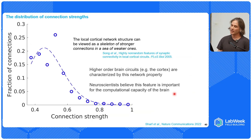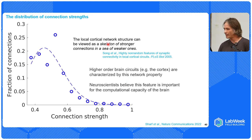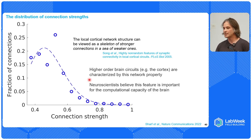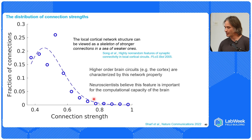Looking at the probability distribution of all these connections, we see that this network can be viewed as a skeleton of strong connections within a weaker background sea of weak ones. If you painstakingly look at patch clamp data in the cortex, you'll see that functional connections also follow this similar scaling rule. Higher order brain circuits such as the cortex are characterized by this network property, and neuroscientists widely believe this feature is important for the computational capacity that resides in the cortex. This is really cool — to recapitulate a functional scaling rule in a system grown devoid of sensory input.